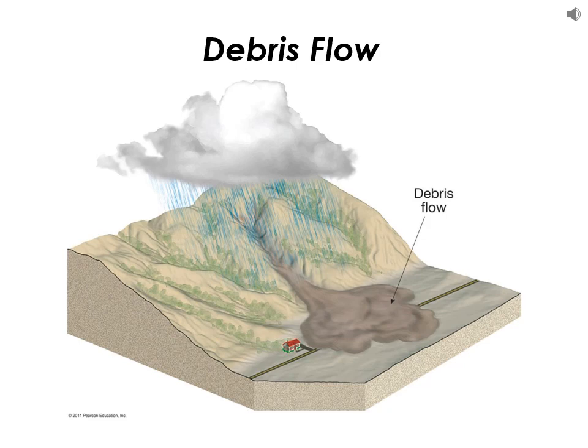A debris flow is another really common example of mass wasting. This happens a lot where you have heavy seasonal rainfall — a place like Southern California, with steep canyons in the San Gabriel Mountains. A really heavy rain event washes a lot of mud and debris into these steep narrow canyons, and the stuff can move really fast — sometimes 60 or 100 miles an hour — carrying a lot of debris, making them very dangerous. When it comes out the mouth of the canyon, that debris slows down and spills out all over the place, causing a really big mess.